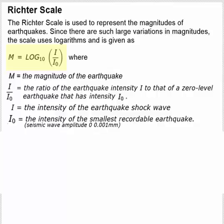I divided by I sub not is the ratio of the earthquake intensity, I, to that of a zero level earthquake, that has intensity I sub not. And I sub not is the intensity of the smallest recordable earthquake.